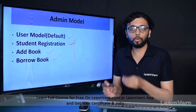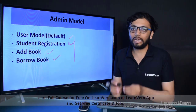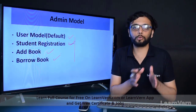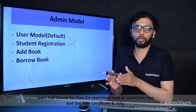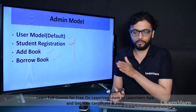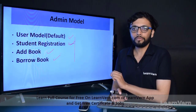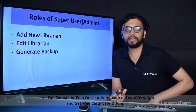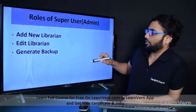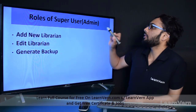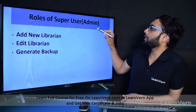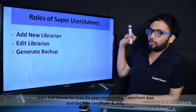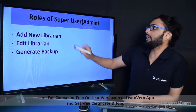This is the admin models. Just to remind you, this is one way you can decide your own project flow - you can decide the library flow by your own, but this is just one example so that you can analyze how to proceed in any project. Next, roles of super user: who is super user? That is our admin.